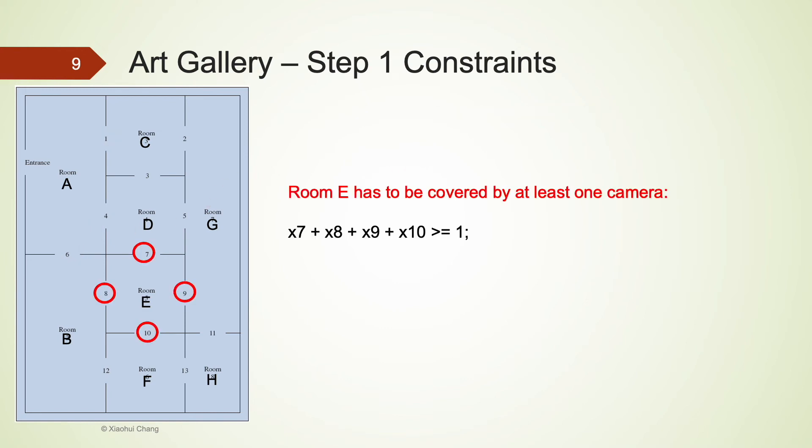Let's repeat this procedure using room E next. Room E has 4 openings. To provide full coverage for this room, we just need to install at least 1 camera at openings 7, 8, 9 and 10. Using the conditional constraint, we would write the sum of x7, x8, x9, x10 to be at least 1.